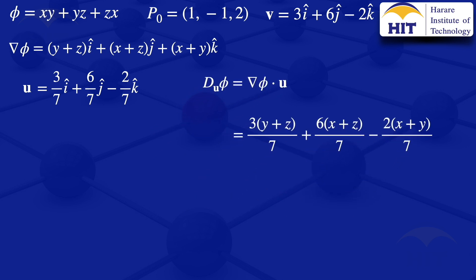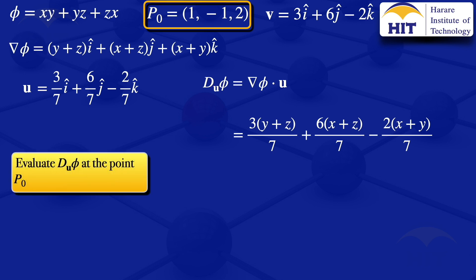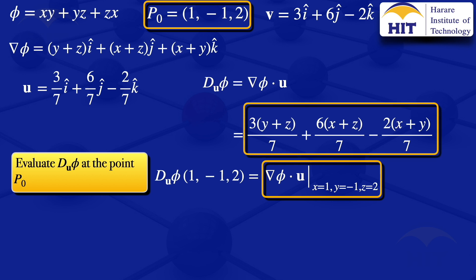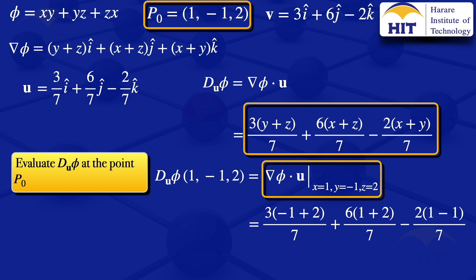We are asked to evaluate the directional derivative at point P₀ = (1, -1, 2). We substitute x = 1, y = -1, and z = 2 into the expression, giving us 3(-1 + 2)/7 + 6(1 + 2)/7 - 2(1 + (-1))/7.